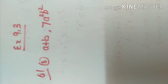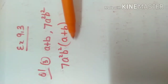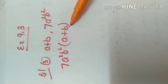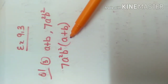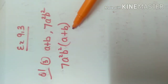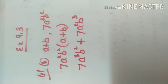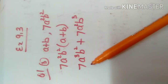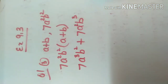First we write it in multiplication form: 7a squared b squared multiplied to a plus b. Now 7a squared b squared is multiplied to a, and then 7a squared b squared is multiplied to b. This gives us 7a cubed b squared plus 7a squared b cubed.